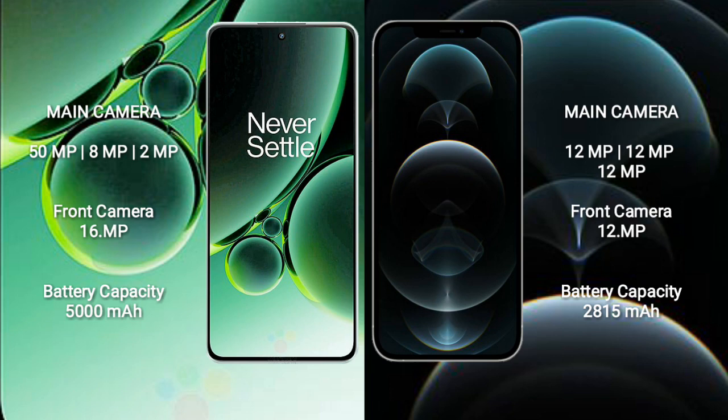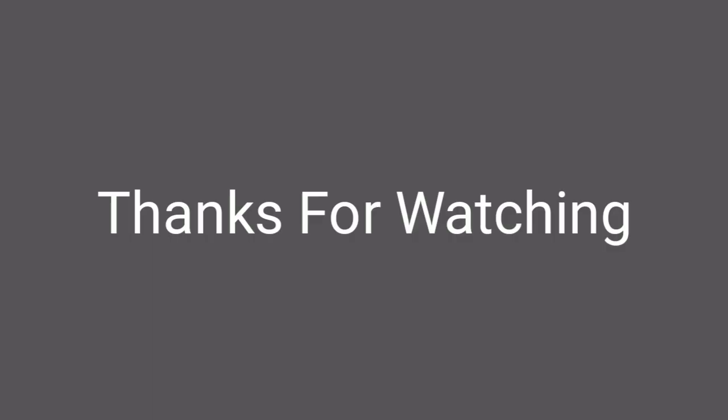OnePlus Nord 3 has a 5000mAh battery with 80W fast charging support. iPhone 12 Pro has a 2815mAh battery with 20W fast charging support.